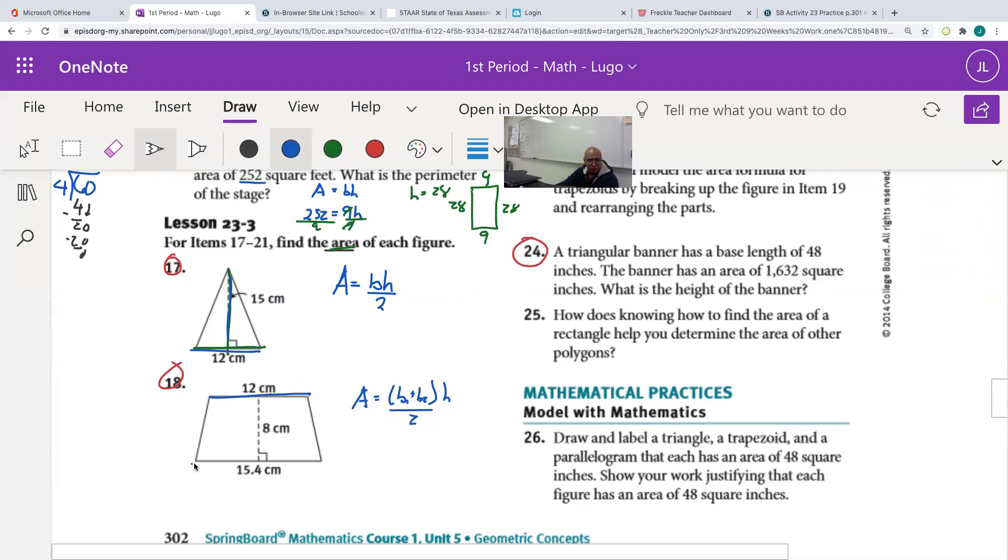we need the bases. Base one and base two. We're going to add those bases. So 12 plus 15.4, which would give us 27.4. And then we're going to multiply by the height, which, again, is a straight line that is perpendicular to the bases, times eight. And then we divide by two.